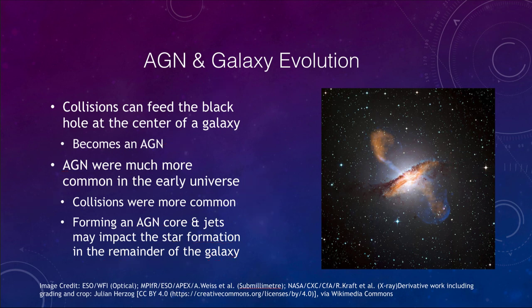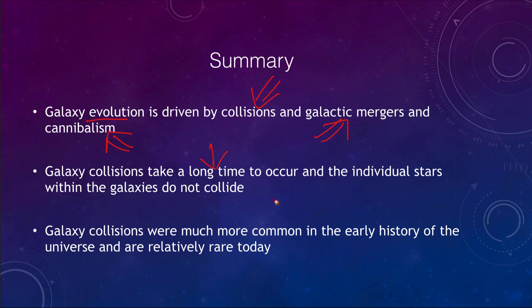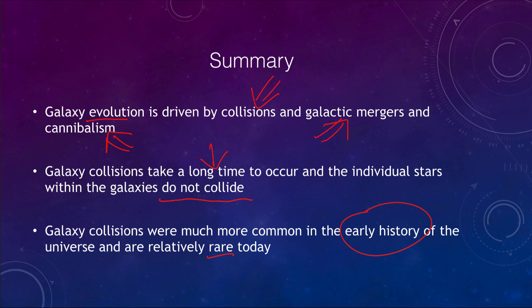In summary, galaxy evolution is driven by collisions, which lead to either mergers of similar-sized galaxies or cannibalization of smaller galaxies by larger ones. These collisions take a long time to occur, and the individual stars do not collide when galaxies do. Galaxy collisions were much more common in the early history of the universe and are relatively rare today. That concludes this lecture on galaxy collisions and mergers. Have a great day everyone, and I will see you in class.